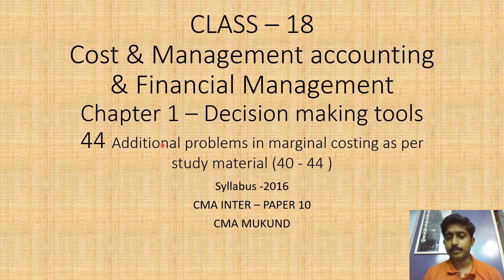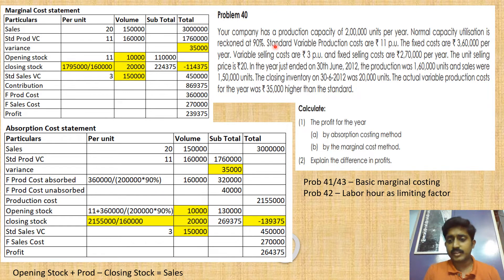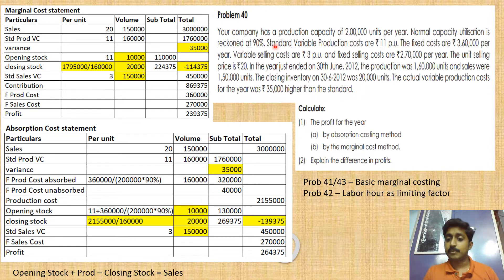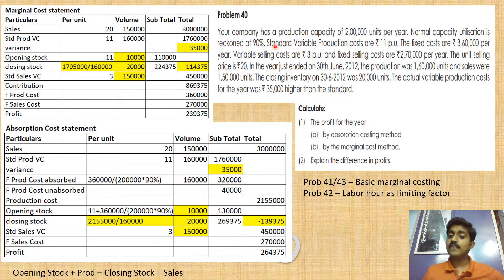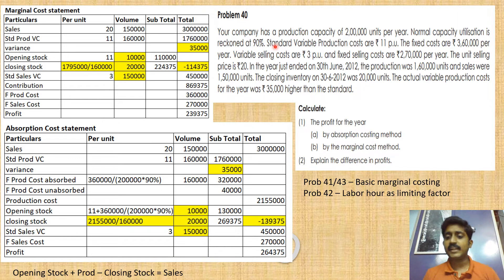This is the last class on marginal costing, and we will move to budgeting next. Today's problem is very complicated but very practical. Until now, all our problems assumed production quantity equals sales quantity, but practically in a company that does not happen — 1 lakh may be produced but 90,000 or 1 lakh 10,000 may be sold, because there will be opening and closing stock of finished goods.